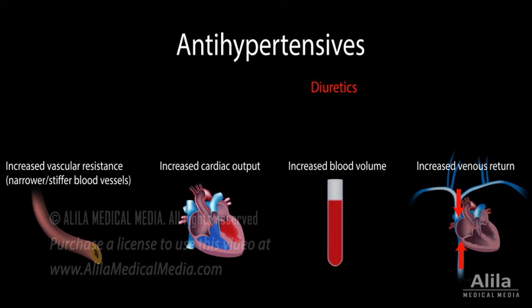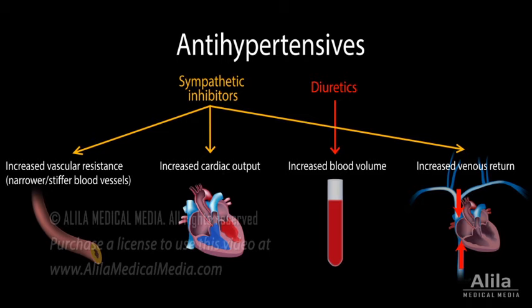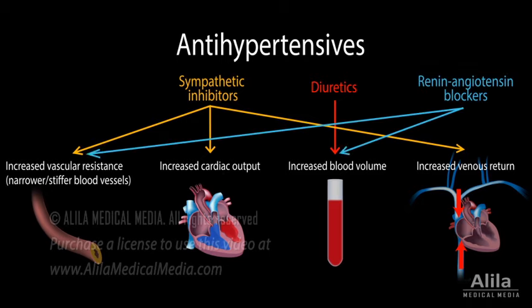Diuretics promote sodium and water excretion by the kidneys and thereby decrease blood volume. Medications that inhibit the sympathetic nervous system or the renin-angiotensin system. And vasodilators, which dilate blood vessels and thereby decrease vascular resistance.